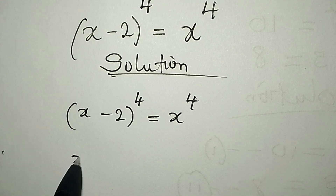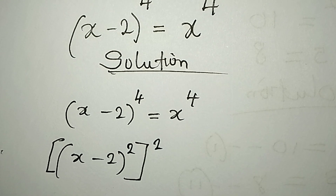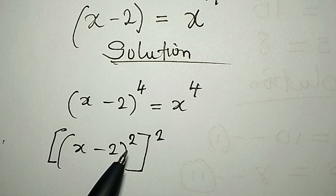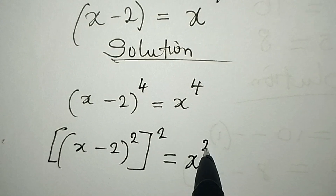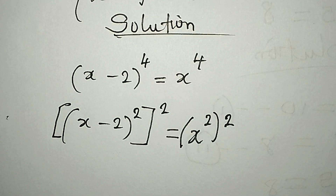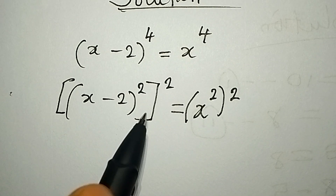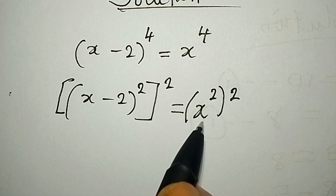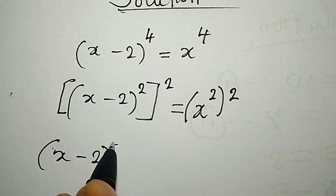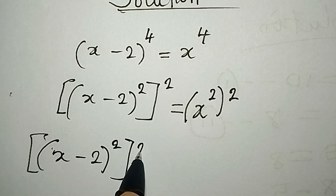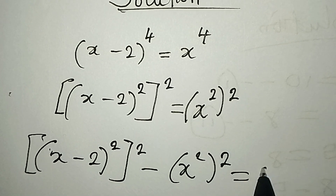From here, let's rewrite this as (x minus 2) squared, to the power of 2, because if I open that bracket I multiply the powers to get the 4 back. This equals x squared to the power of 2. Moving this to the left, we have (x minus 2) squared, to the power of 2, minus x squared to the power of 2, equals 0.